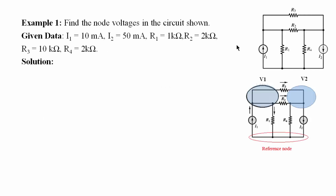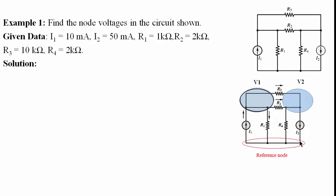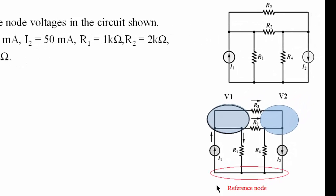Example 1. Find the node voltages in the circuit shown. First of all, we need to define the reference node, which is the ground node. And then, we define the node voltages V1 and V2. After that, we need to apply KCL to node 1 and node 2.